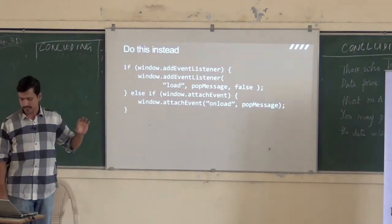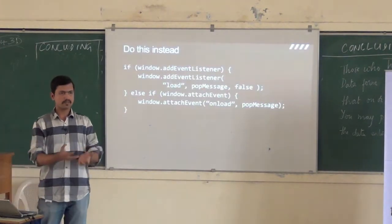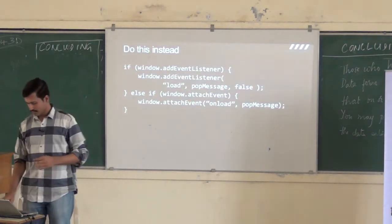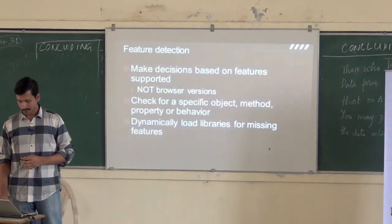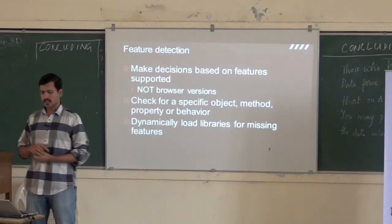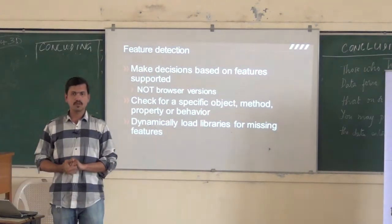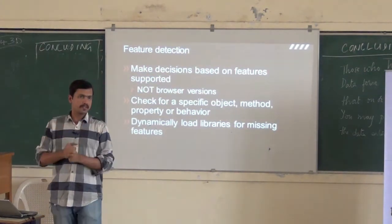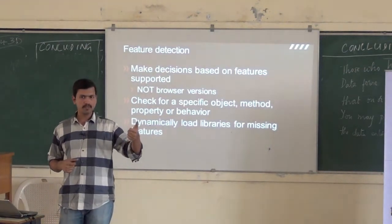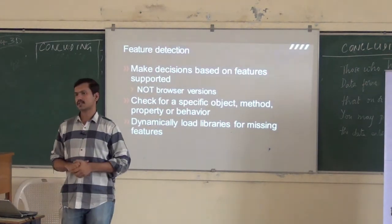This might not seem like a major deal, but this is called feature detection. When browsers get better and better, your code just automatically goes in the correct path or the preferred path. Make decisions based on features, not browser versions — you can check for specific objects, methods, properties, or behavior. And another thing this allows you to do is if you detect that a particular feature your web app requires is not available, then you can go ahead and load up a polyfill — basically another library that supplements that particular browser with that functionality.